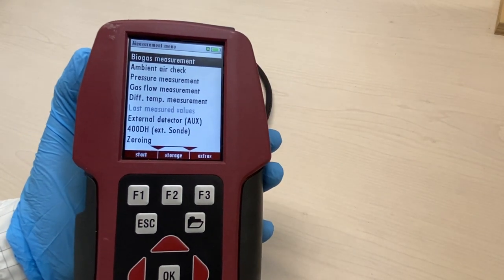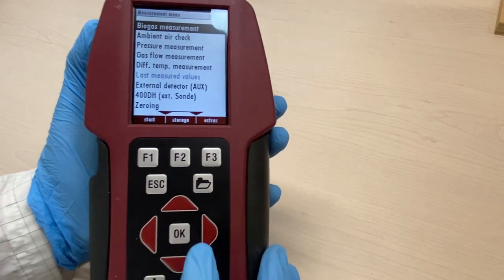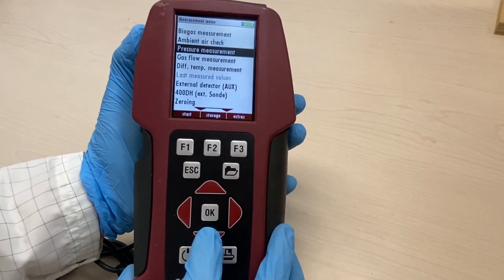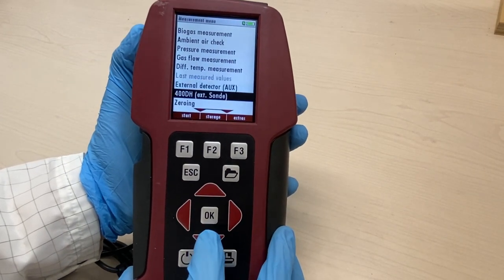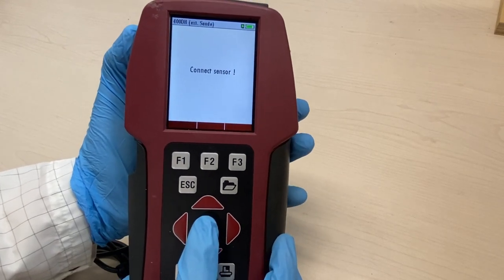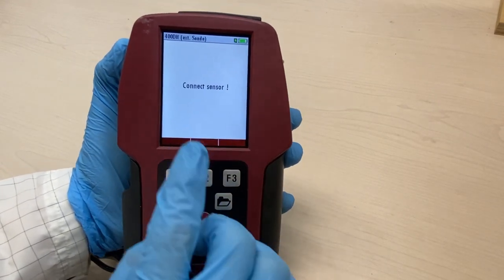Scroll down the menu to 400 dh and click OK on the keypad. The window will display the alert: connect sensor.